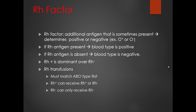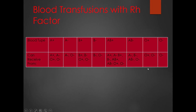Factoring in the RH factor: A positive can receive from A positive, A negative, O positive, and O negative. A negative can only receive from A negative and O negative. B positive can receive from B positive, B negative, O positive, and O negative. B negative can receive from B negative and O negative only. AB positive can receive from all eight blood types — it is the universal universal recipient. AB negative can receive only from negative types: A negative, B negative, AB negative, and O negative. O positive can receive O positive and O negative. O negative can only receive O negative, making O negative the universal universal donor.